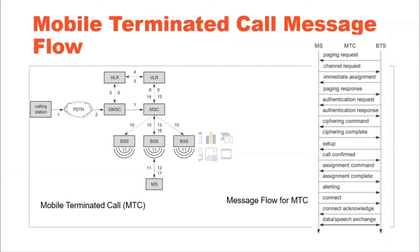Step 4: the HLR now checks whether the number exists and whether the user has subscribed to the requested services, and requests the Mobile Station Roaming Number (MSRN) from the current VLR.